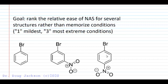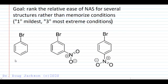But given our knowledge of withdrawing and donating groups, I want you to be able to rank the relative ease of nucleophilic substitution for several structures, rather than memorizing conditions - 300 degrees, 200 degrees, 15 degrees. The conditions are highly variable for any substituted benzene nucleophilic substitution reaction, so it doesn't benefit us to memorize them. But what we can do is learn how to recognize ones that will be more easily substituted than others. Say I said give these a number, with one being the mildest conditions and three being the most extreme required.